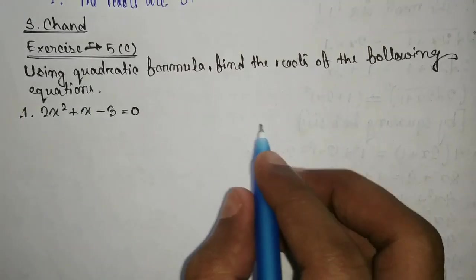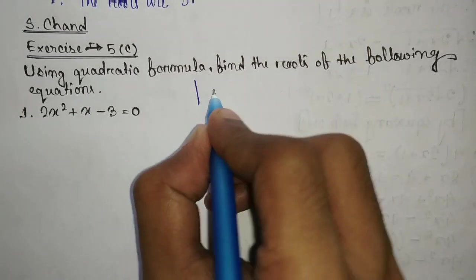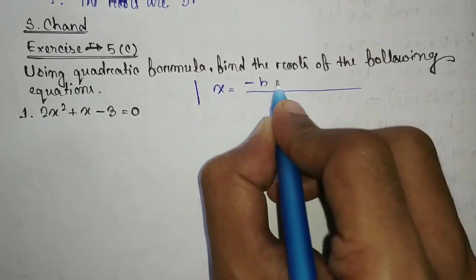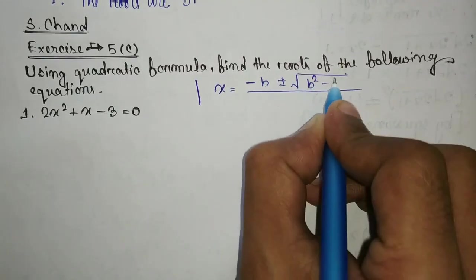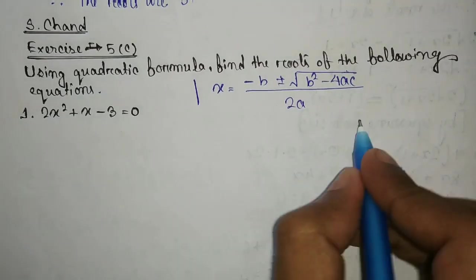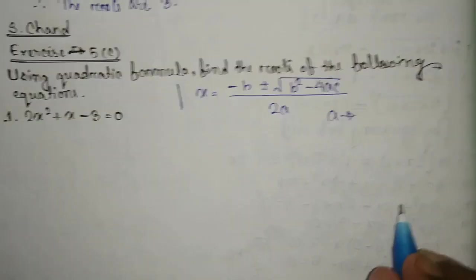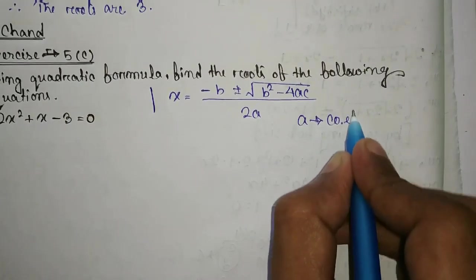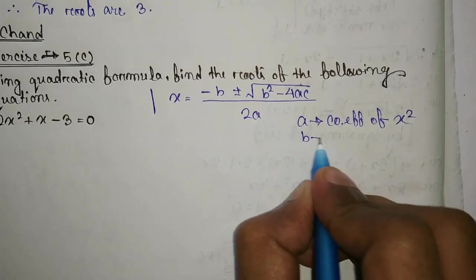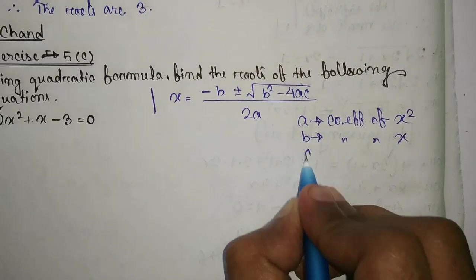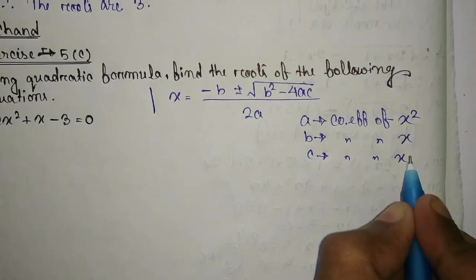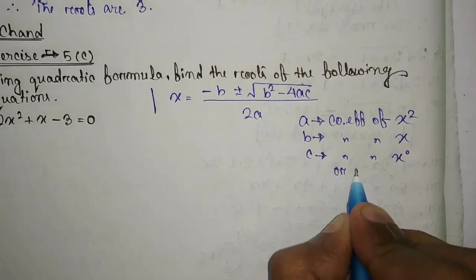Now we know what is the quadratic formula? The quadratic formula is x equal to minus b plus minus root over b square minus 4ac by 2a. Now what is a? a is the coefficient of x square, b is the coefficient of x